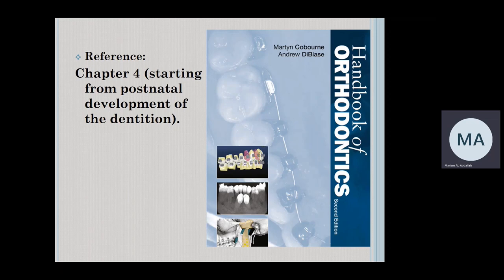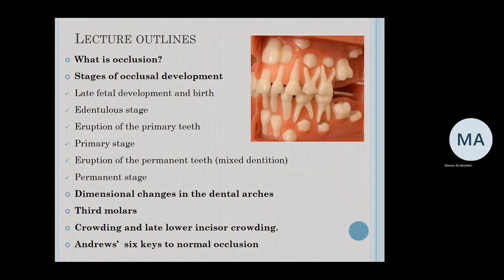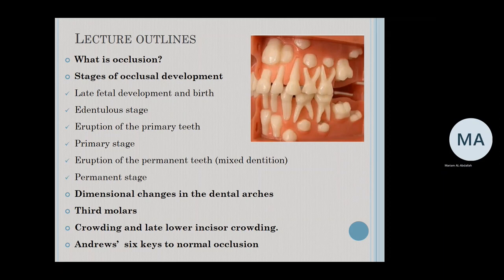We're not going to be really concerned with the prenatal development — it's mainly starting from postnatal development — in addition to the handout from the slides. Our lecture outline is going to include what is occlusion and then the different stages of occlusal development: starting from late fetal development and birth, then the edentulous stage, eruption of primary teeth, primary stage, eruption of permanent teeth in the mixed dentition, and then the permanent stage. We will also talk about dimensional changes in the dental arches, third molars and their eruption, crowding and late lower incisor crowding, and angiostics to normal occlusion.